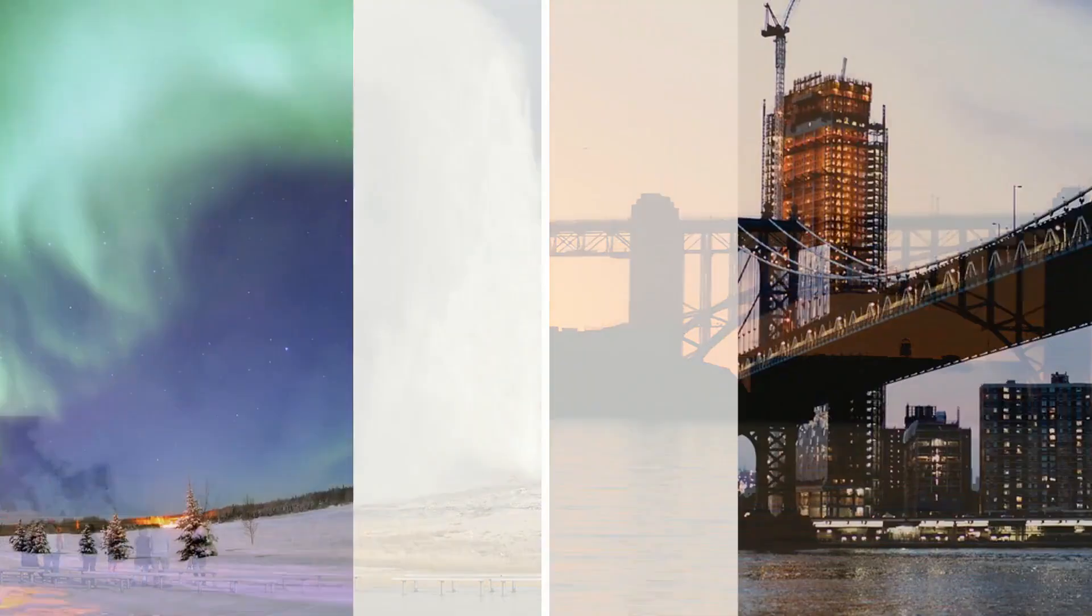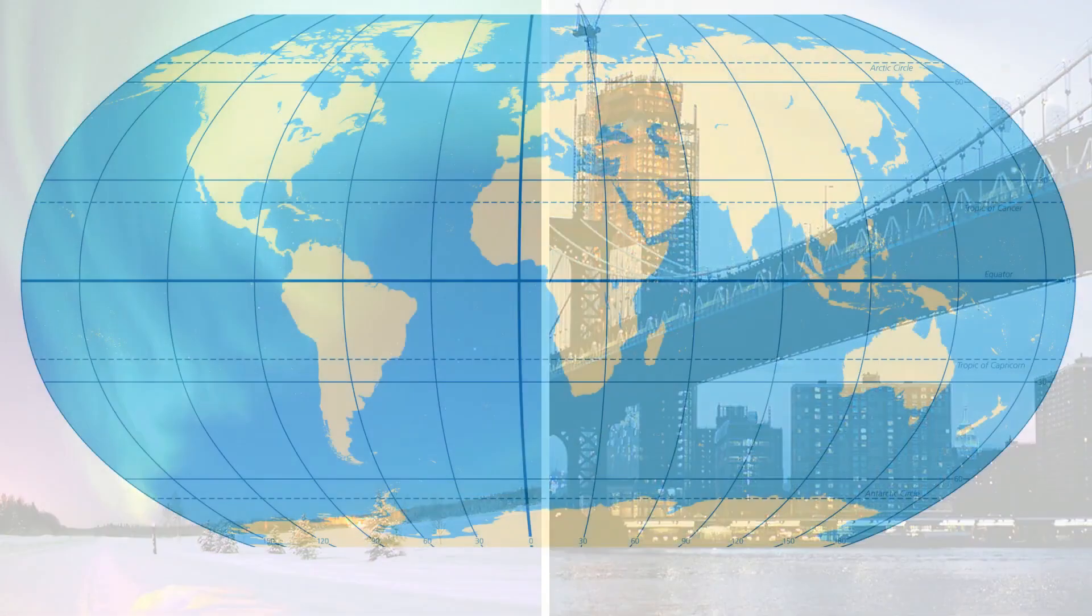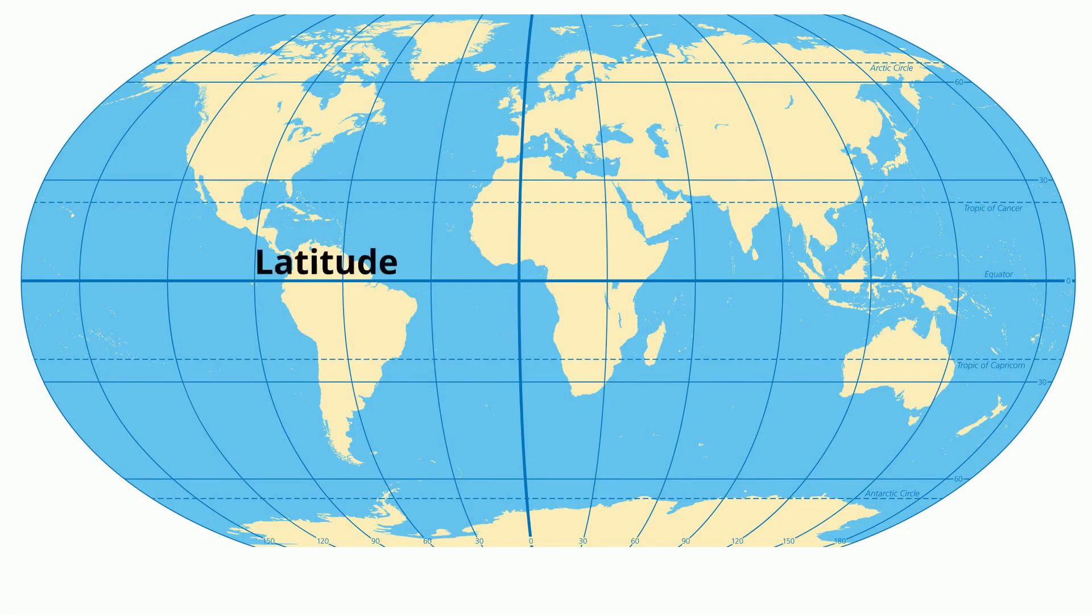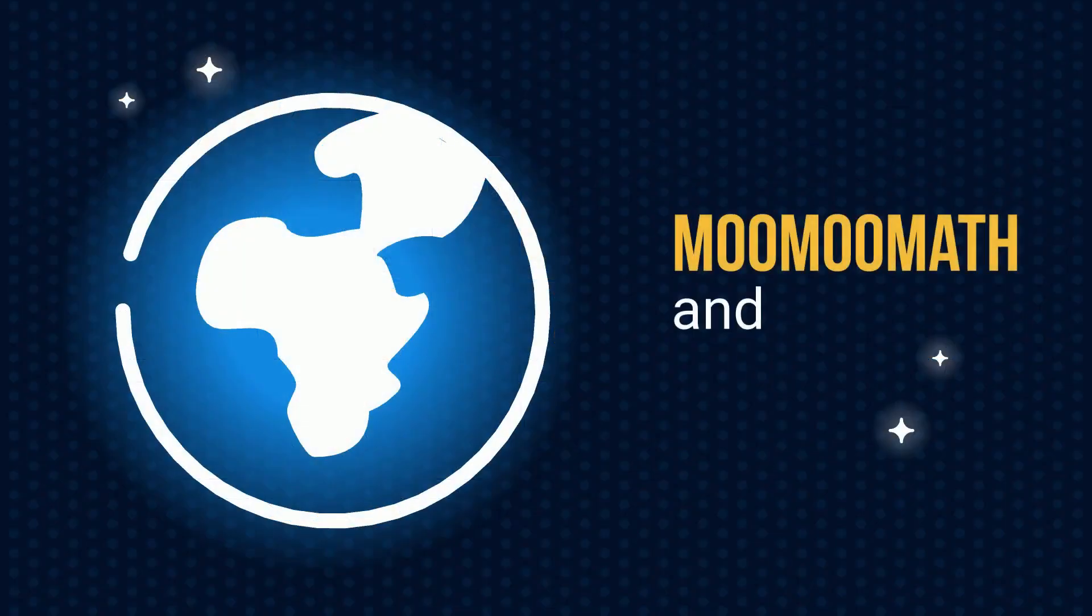In order to locate the millions of landmarks on Earth, the Earth is divided into horizontal lines of latitude and vertical lines of longitude. Welcome to MooMooMath and Science.